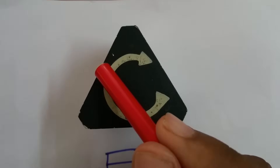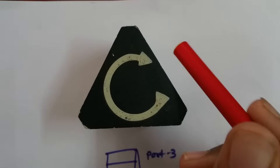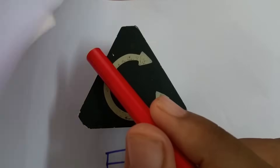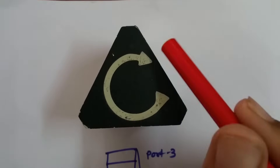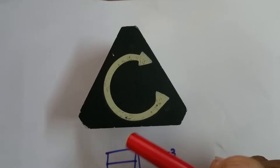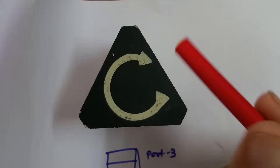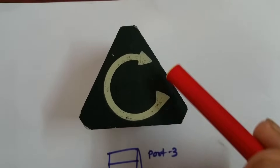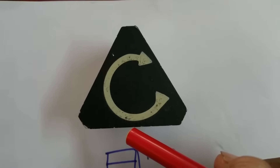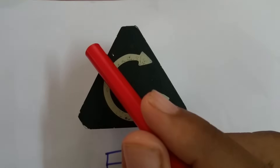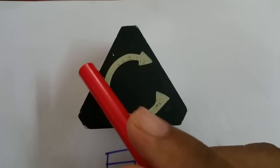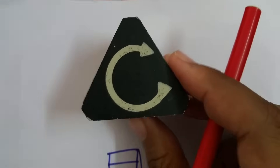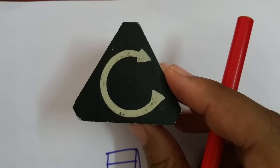Similarly, if we give input at port 2, output at port 3 will be there as per the input given, and output at port 1 will be zero. So that is how a circulator functions.